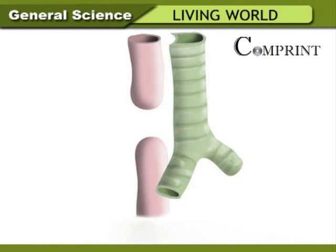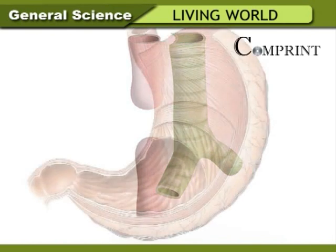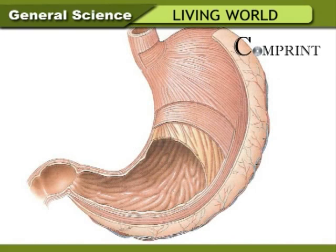The esophagus is a thin, narrow, muscular structure that sends food to the stomach. The stomach's inner walls are folded. With the movements of stomach muscles, these folds make the food smooth. This food is called chyme.